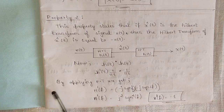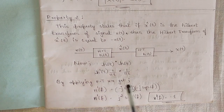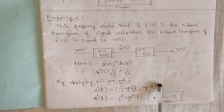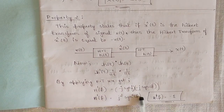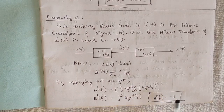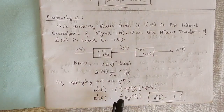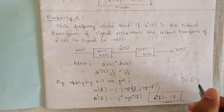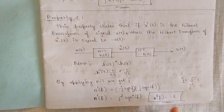To prove this, consider h(t) * h(t) = h'(t) = (1/πt) * (1/πt). Applying the Fourier transform, H'(f) = (−j · sgn(f)) · (−j · sgn(f)). Simplifying: minus times minus gives plus, so we get j² · sgn²(f). Since sgn²(f) = 1 and j² = −1, we get H'(f) = −1.